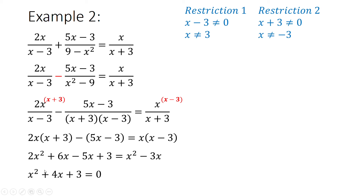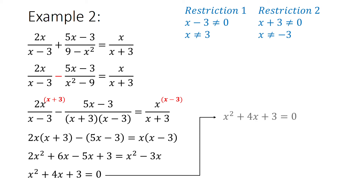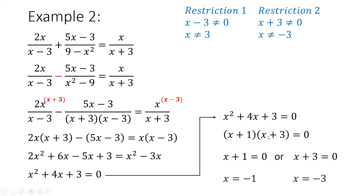I can see it's a quadratic equation because it's got an x squared, which means the only way to solve it is to factorize the left-hand side and make the right-hand side equal to 0. So it's going to be a trinomial — I need factors of 3 that when I add them, I get 4, which will be 3 and 1. Then I do my split: x plus 1 equals 0, x plus 3 equals 0, and then I solve.